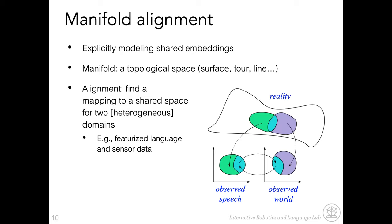One way to tackle that is manifold alignment — approximating a reality in which heterogeneous domains have some non-observable overlap. If you have speech on one side (someone talking about a mug) and an observed world with percepts on the other, somewhere in between is the thing that must coexist and be the same object. Given enough data, you can approximate the shape of this reality with functions that allow you to take a new object, put it into that function, and understand what other modality it refers to.